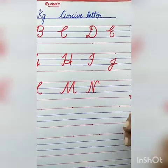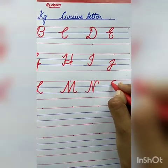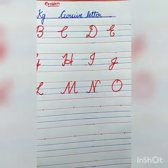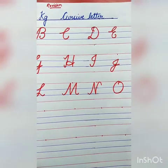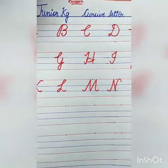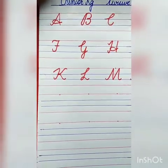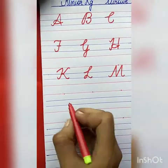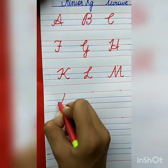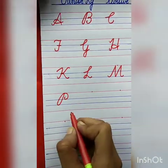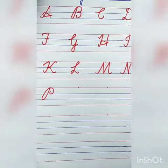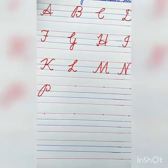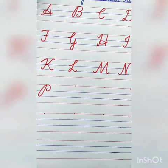Now the next letter is O. Curve, curve, stop here. O for owl. The spelling of owl: O-W-L, owl. Now tell me the next letter. P — very good! P for peacock. See here. The spelling of peacock is P-E-A-C-O-C-K, peacock.